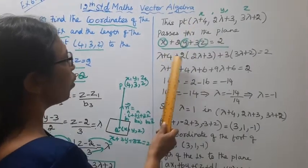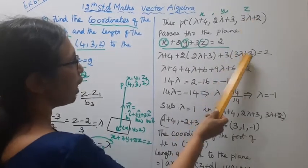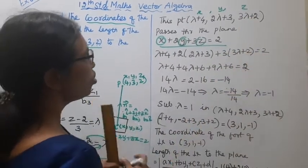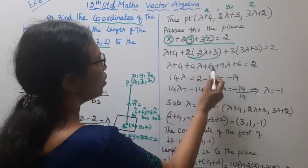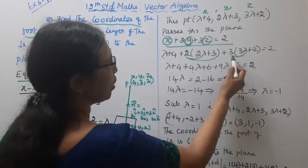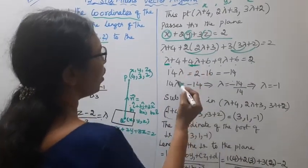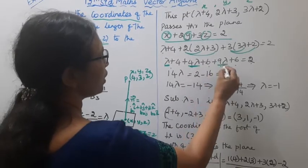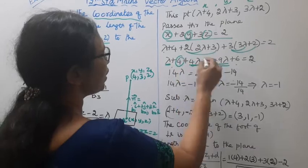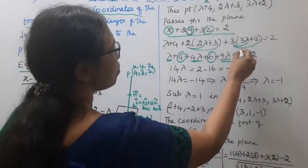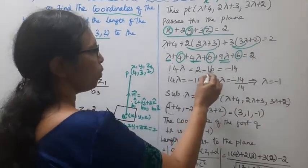Expanding: λ + 4 + 4λ + 6 + 9λ + 6 = 2. Collecting λ terms: 1λ + 4λ + 9λ = 14λ. Collecting constants: 4 + 6 + 6 = 16. So 14λ + 16 = 2, which gives 14λ = 2 - 16 = -14.